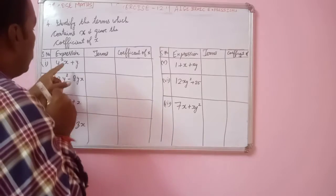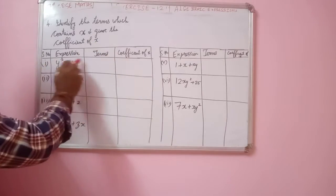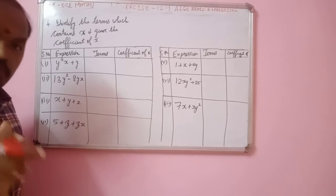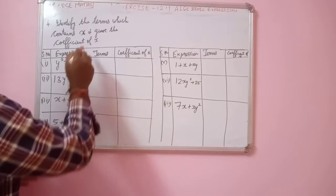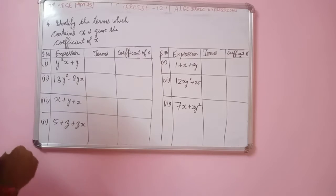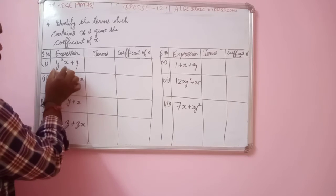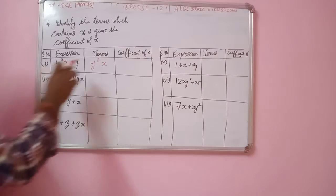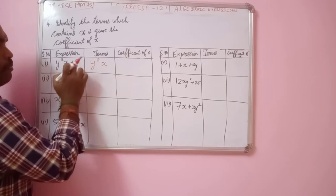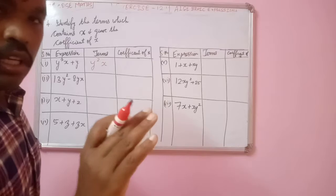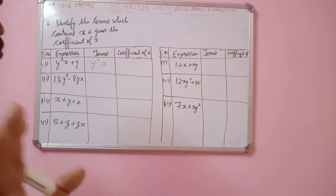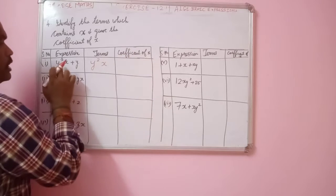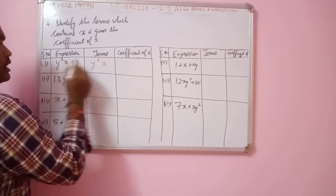Expression: y² x plus y. What is the term of x over here? Terms means y²x is one term, y is also one term. But the question asks: identify the terms which contain x. So in this expression, the term y²x contains x — y²x is the term. There is no x in y, so we do not accept y. The coefficient of x in y²x is y².